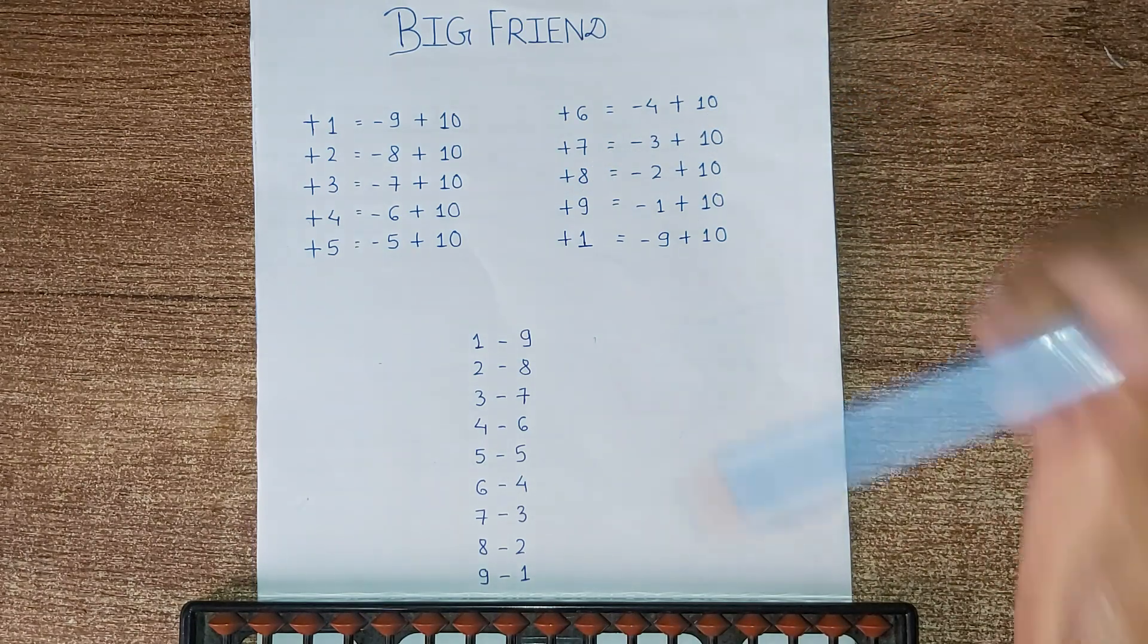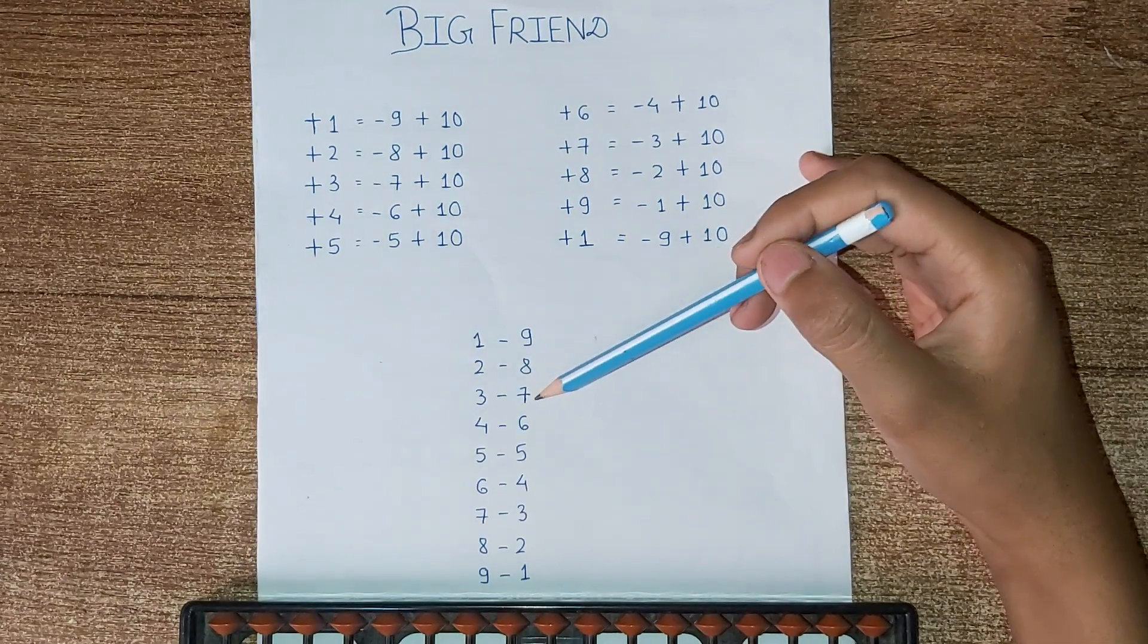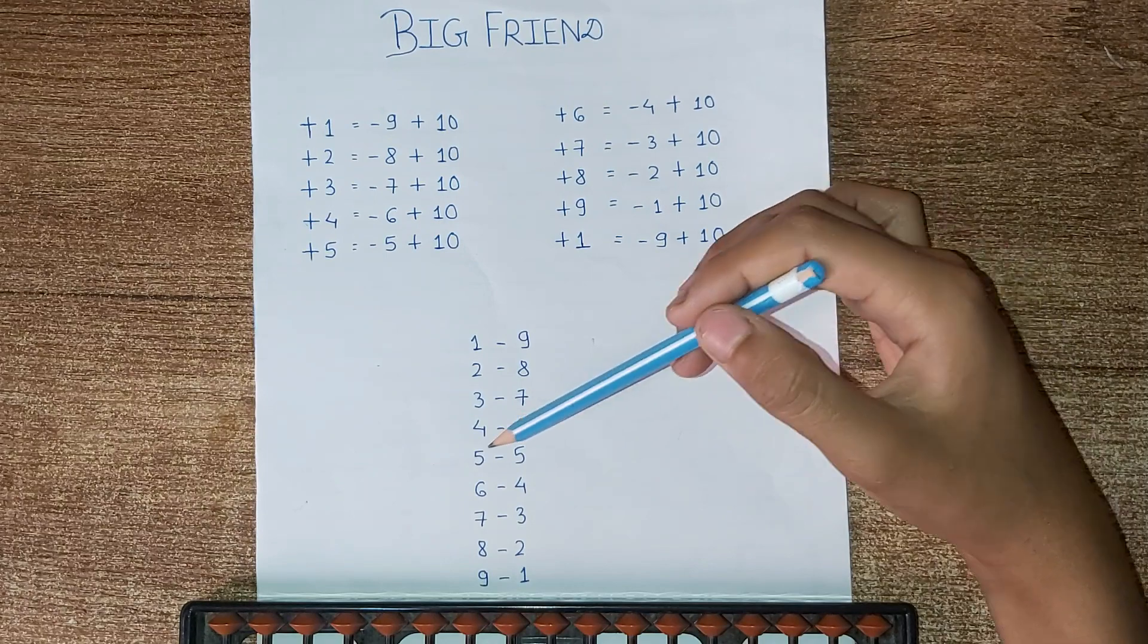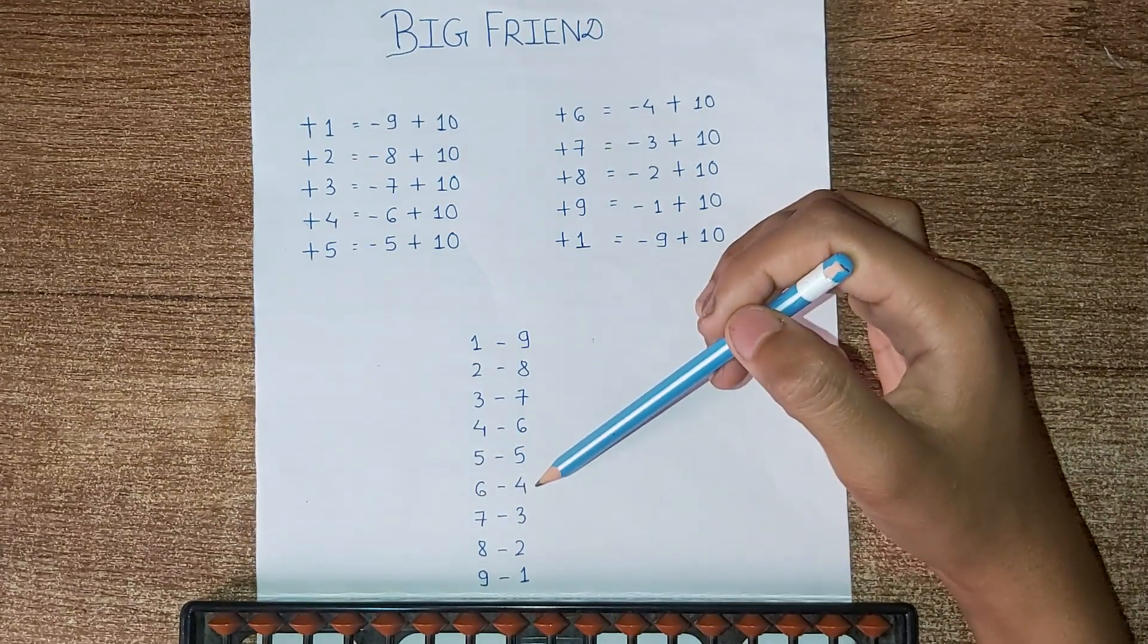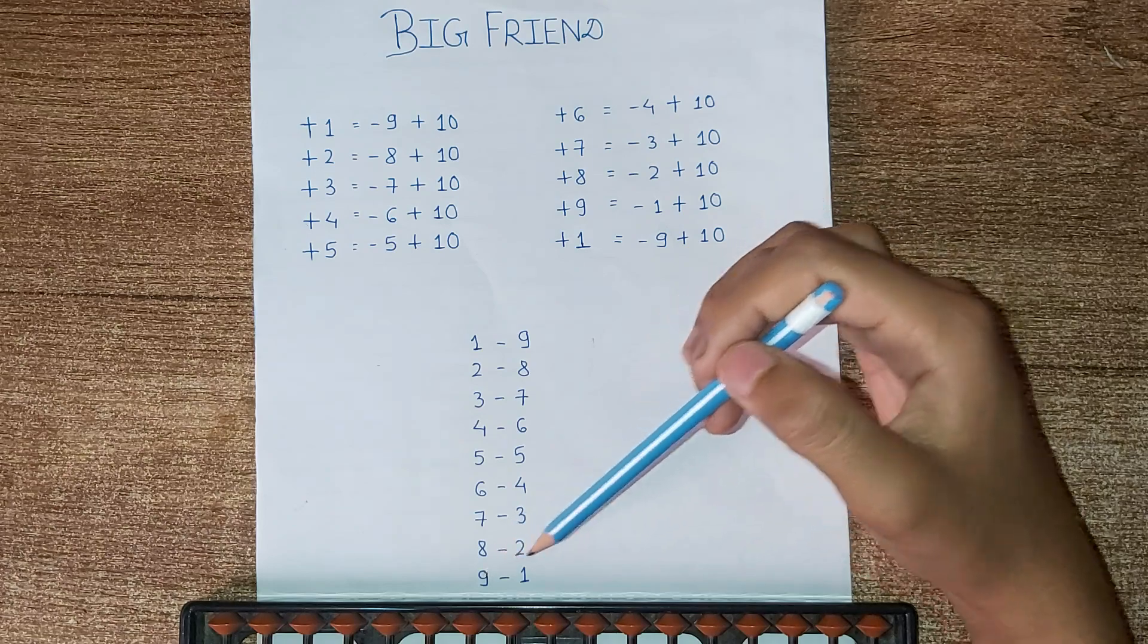From this, you can be clear that 1 friend is 9, 2 friend is 8, 3 friend is 7, 4 friend is 6, 5 friend is 5, 6 friend is 4, 7 friend is 3, 8 friend is 2, and 9 friend is 1.